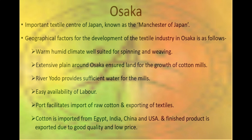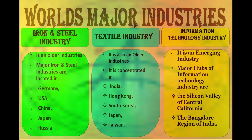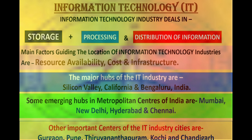Finally, information technology industry is also known as the engineering industry. Major hubs of information technology industry are Silicon Valley in Central California and the Bengaluru region of India. Silicon Valley is the world's top tech hub today. Besides this, Singapore is named as miniature Silicon Valley. London, Tokyo, and New York are also important hubs of information technology. Metropolitan IT hubs in India are Mumbai, New Delhi, Hyderabad, and Chennai. Besides these, Gurgaon, Pune, Thiruvananthapuram, Kochi, and Chandigarh are also important.